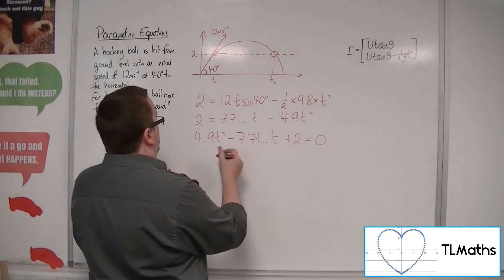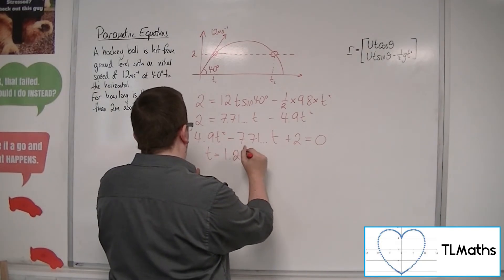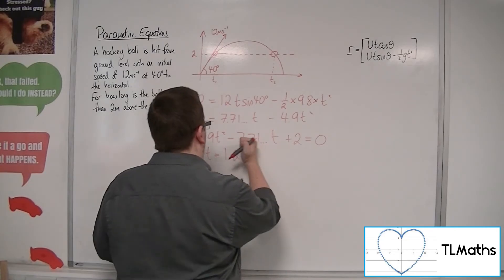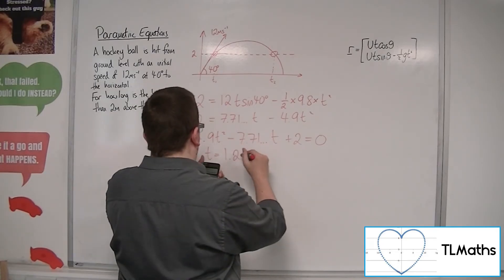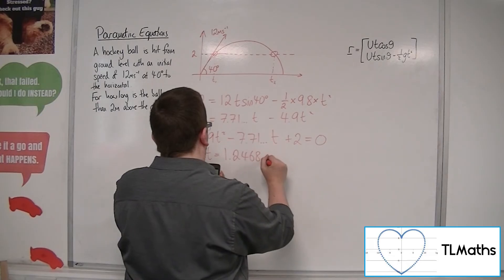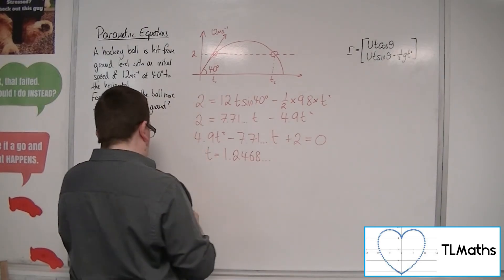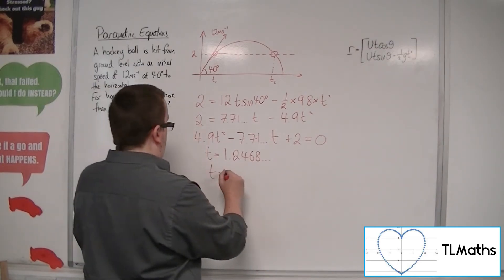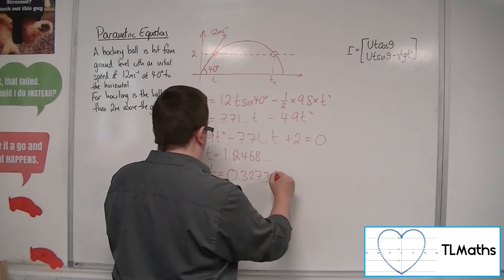And we get 2 values. t is equal to 1.25. Well, let's write it in a few more decimal places. 1.2468. And my second solution is t is equal to 0.32736.